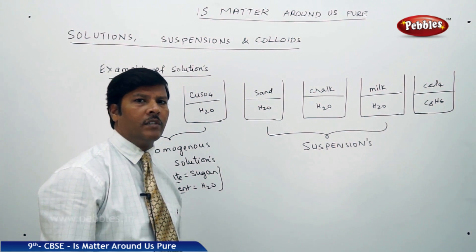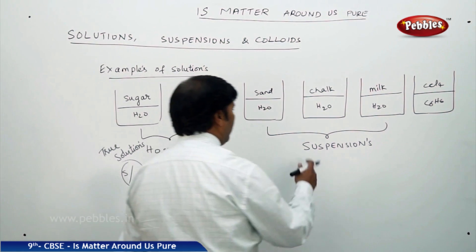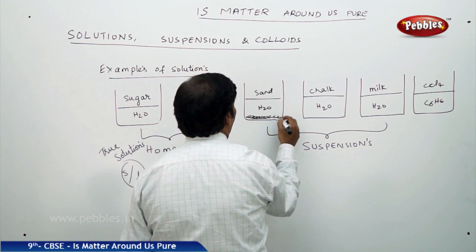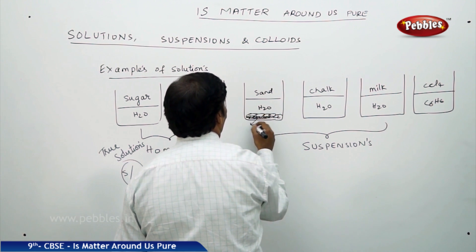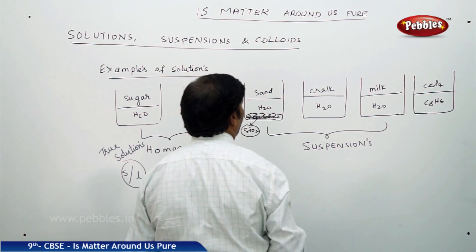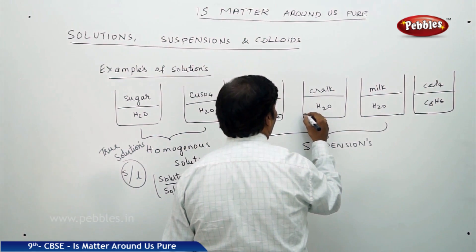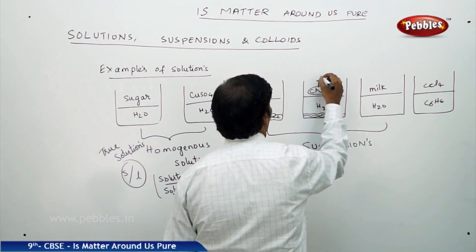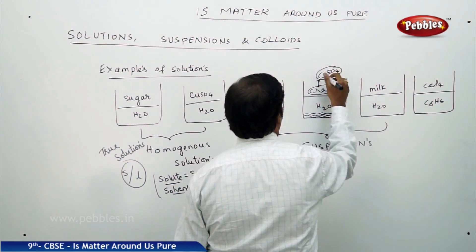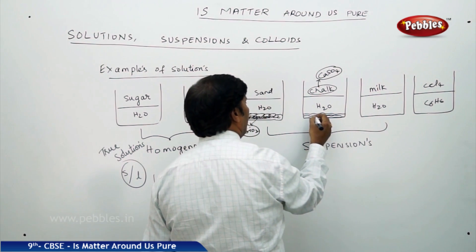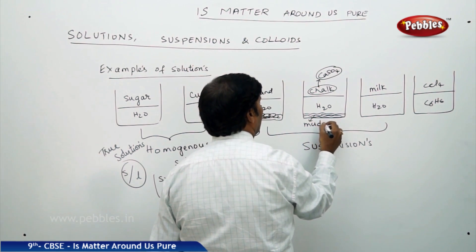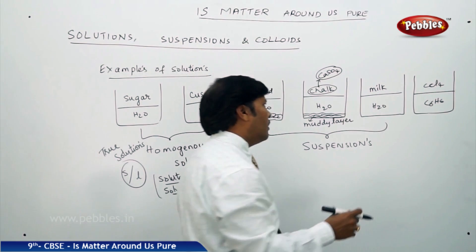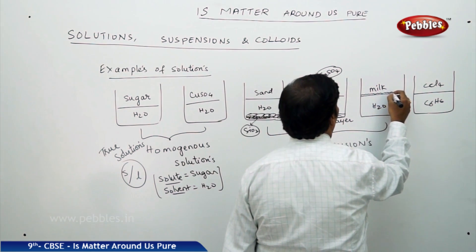Syrupy liquids also come under suspension. When sand is dissolved in water, it forms a muddy layer at the bottom — sand particles are settling there. Calcium sulphate, which is chalk, forms a muddy layer, so it is just like a suspension. Even milk in water forms a thick fatty layer on top.